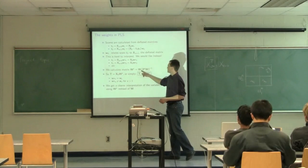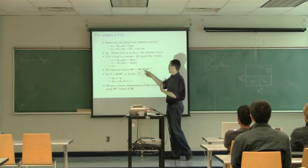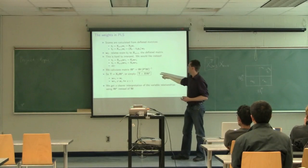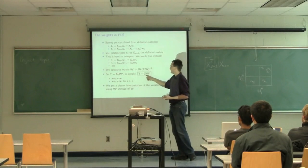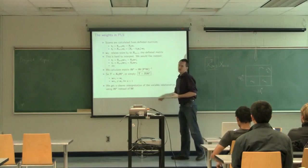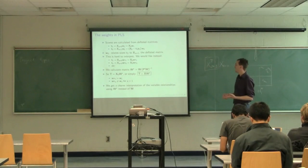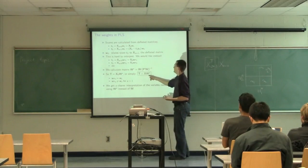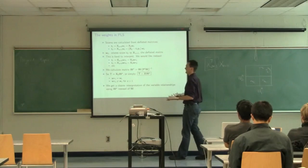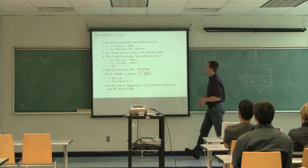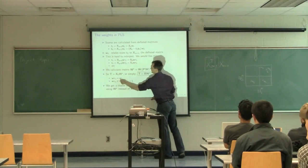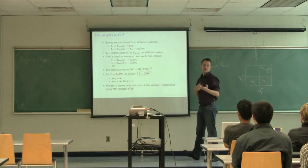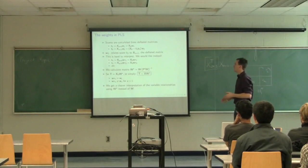Once we have W-star from its formula, we can go straight from our X space to our scores using W-star. In the same way that in PCA we multiply X by P to get T, in PLS we multiply X by W-star to get our scores. W-star-1 is obviously equal to W1, so for the first component W and W-star are the same. But for the second and subsequent components they start to differ.